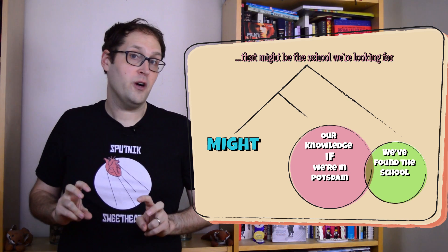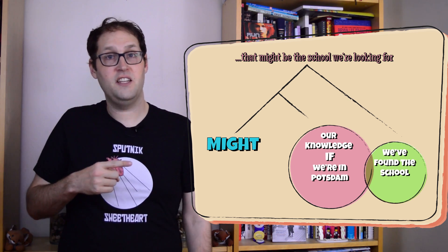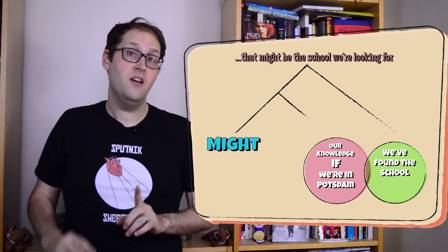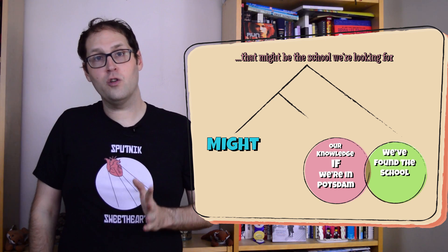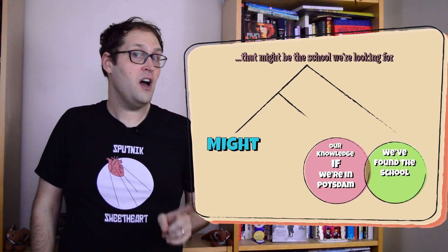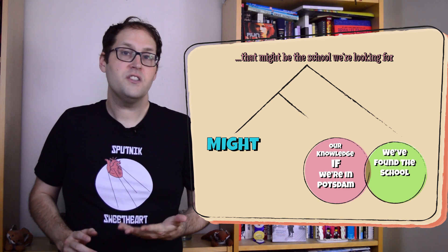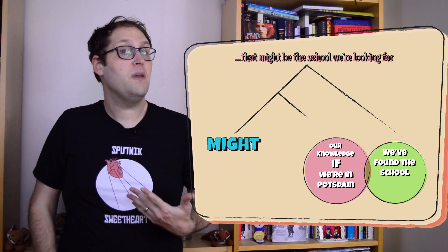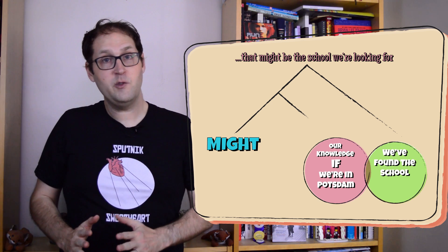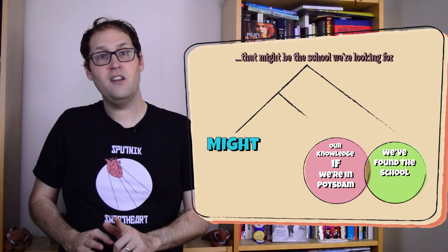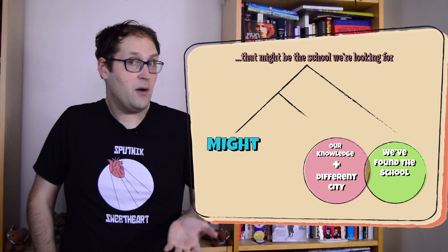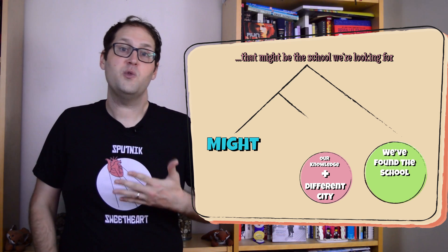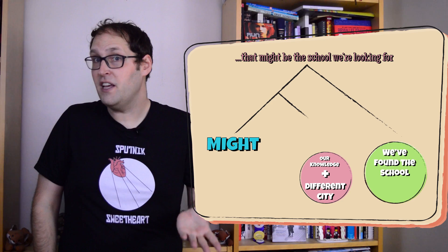The if clause, "if we're in Potsdam," really is a restrictor — like in that sentence with "usually" — then it comes in and temporarily shrinks down the first set, so that now the sentence is only dealing with worlds that are in line with the speaker's knowledge and where they're in Potsdam. In other words, the sentence means something like, "if we learned that we're in Potsdam, we'd conclude that that might be our school." And that seems to be what the sentence actually means. And importantly, other sentences with different cities in them come out false, just like we want, since they shrink down the first set so much that it squeezes out any possibility of being anywhere near the destination.